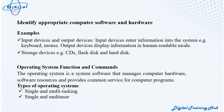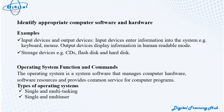The operating system is system software that manages computer hardware and software resources and provides common services for computer programs. Types of operating systems include: single and multi-tasking; single and multi-user; distributed — manages a group of distinct computers and makes them appear as a single computer; embedded — designed for embedded computer systems; real-time — an OS that guarantees to process events or data by a specific moment in time.